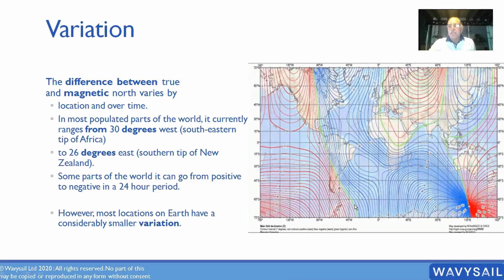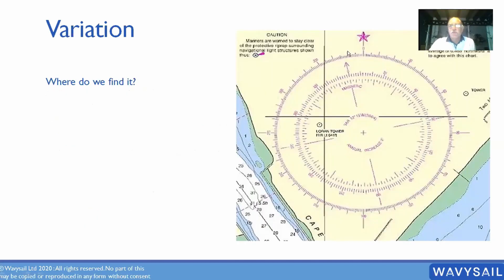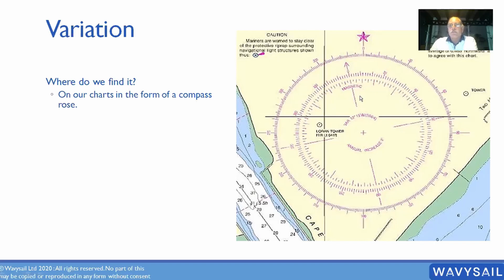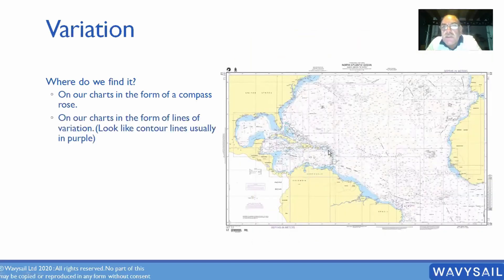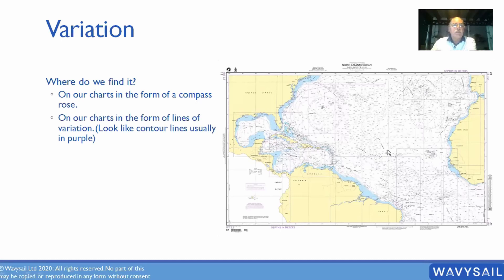Where you are in the world makes a big difference to your variation. Where do we find it? On our compass rose — there's our true north, always on every compass rose, and quite often it will have an inner rose showing magnetic variation, dated to a specific year. Our charts also form lines of variation on the bigger ones, which look like contours. This is a north Atlantic chart, and because variation changes considerably across the Atlantic we have contour-like lines — usually in purple.